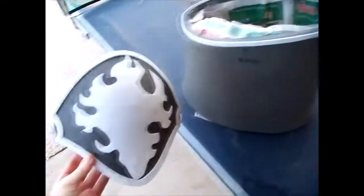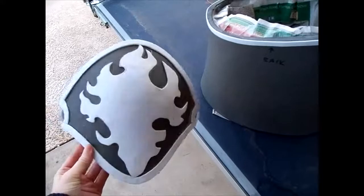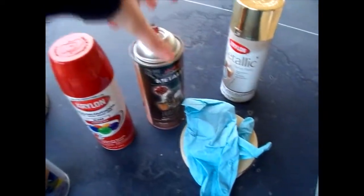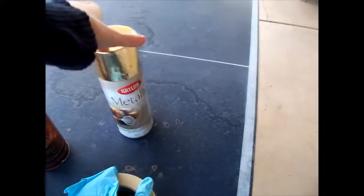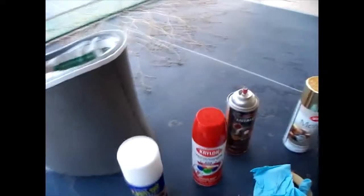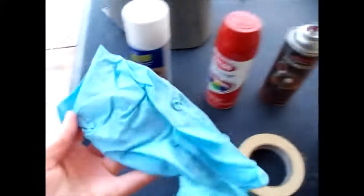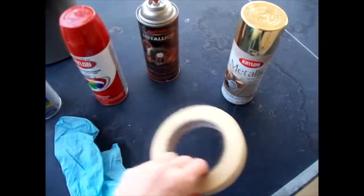So I'm going to paint my chest piece and my shoulder guard. I have my Plasti Dip, which seals the foam. And then I have my red, silver for highlights, and gold. And I also have a clear coat somewhere. I think it's inside. I've got my plastic gloves and tape to tape things off later.